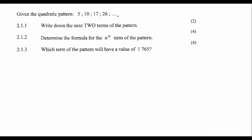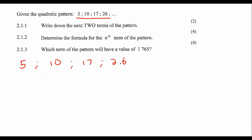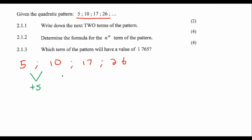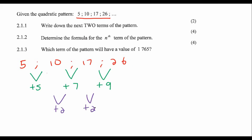So if we carry on here, we've got 5, 10, 17. Can you see what's happening here? What we have is this one is going up by 5, this one is going up by 7, and this one is going up by 9. Can you see what happens now if we go to the next level? Then it goes up by 2. That is a quadratic number pattern.